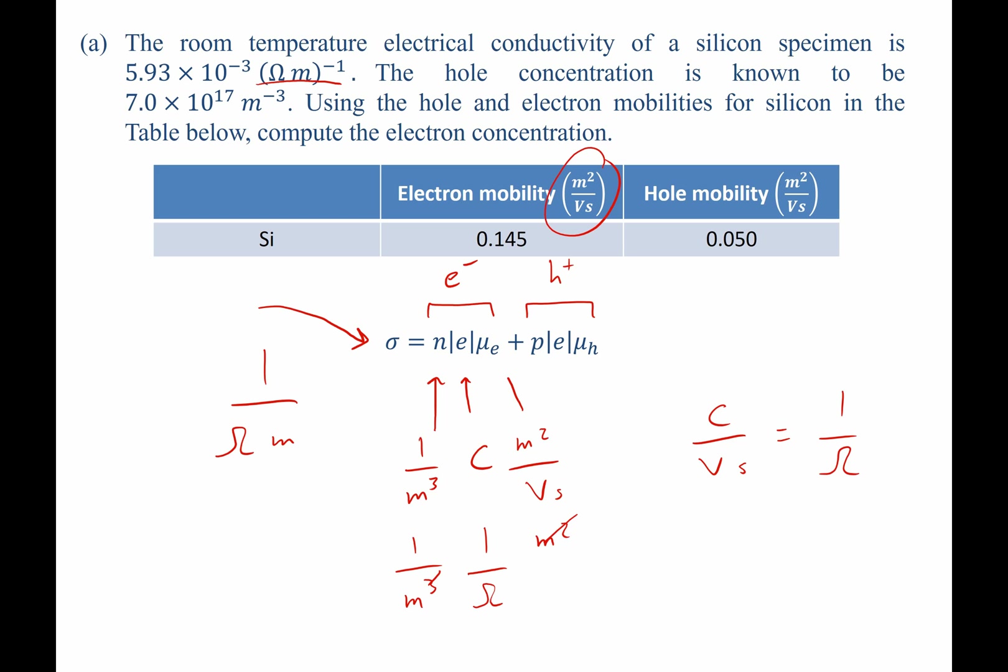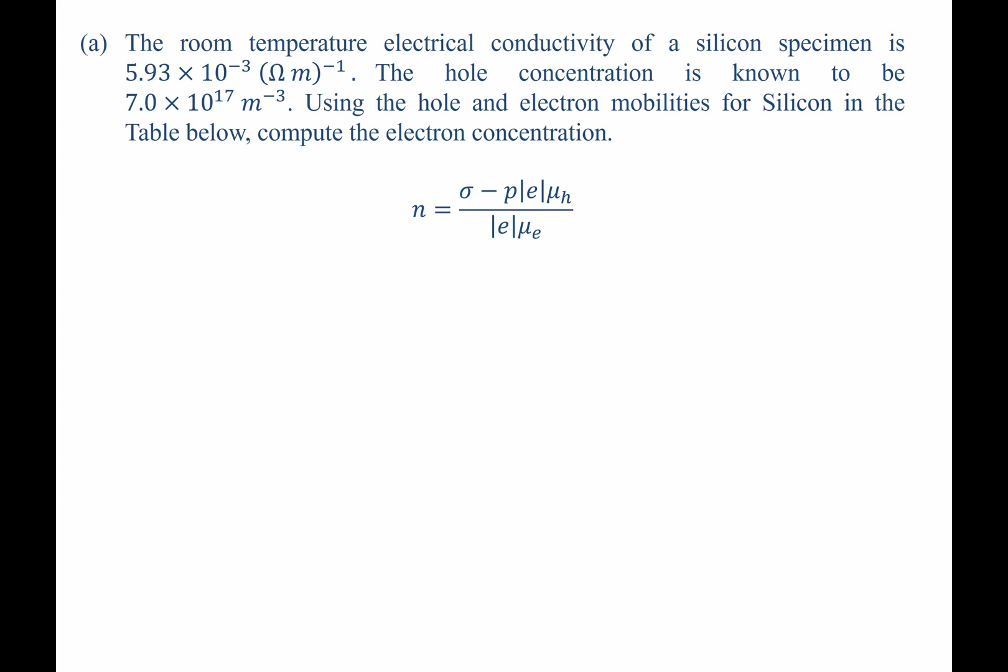Let's go ahead and rewrite this expression solving for n, since that's what we're asked to solve for. n will be the total electrical conductivity minus the hole component divided by the fundamental charge of an electron times the mobility of an electron. Let's punch in values.